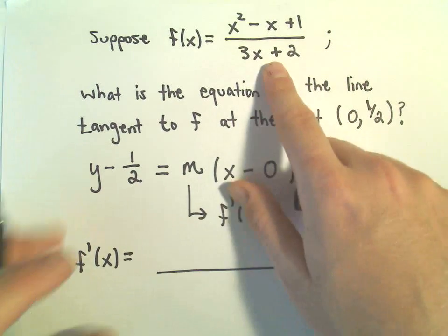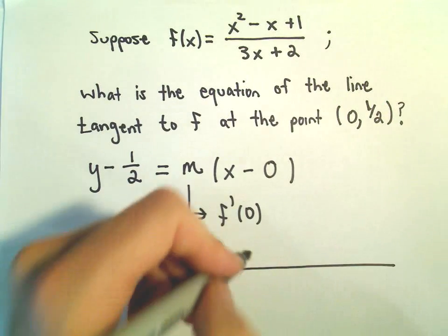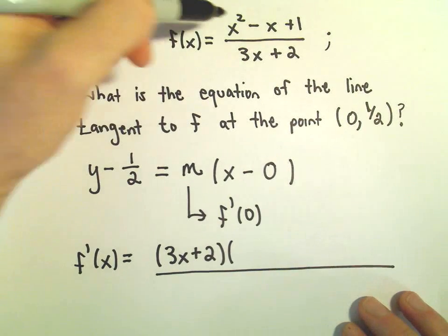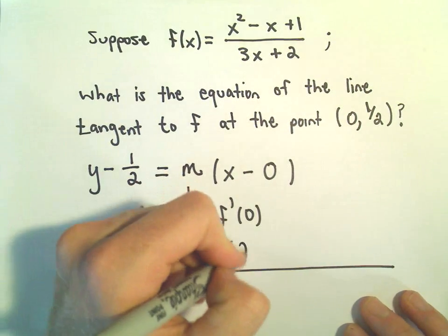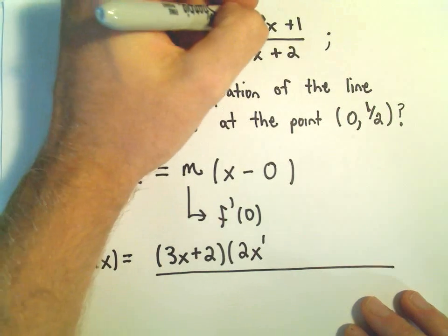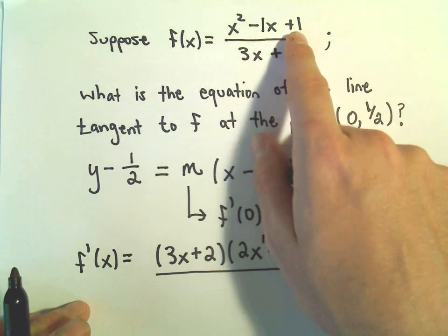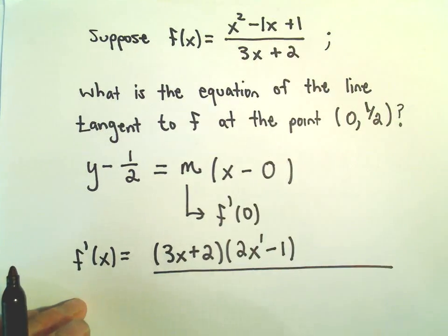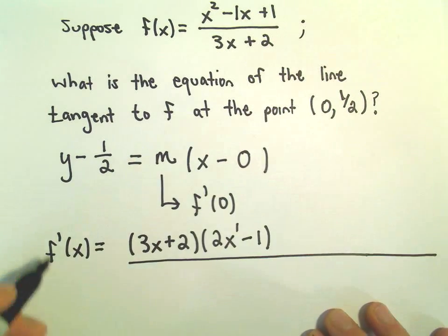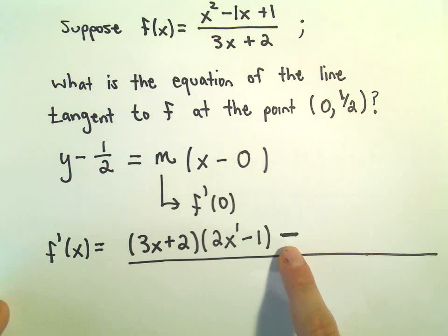So you get whatever's in the denominator, 3x + 2 in this case. We'll multiply that by the derivative of the numerator. So the derivative of x², the 2 would come out front and then we would take 1 away from the exponent. The derivative of -x will just be -1. And then the derivative of the constant is just 0. So that'll be the first part of the quotient rule.